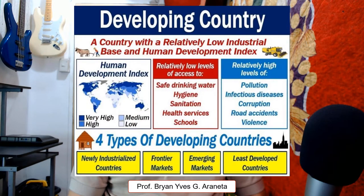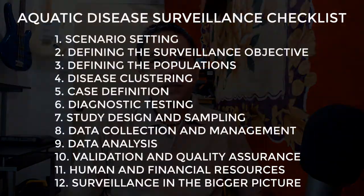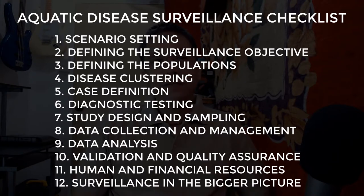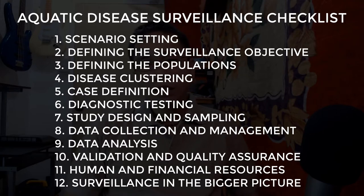As we all know, these countries have limited capabilities and expertise, especially in fish health monitoring. So let's go directly to the checklist. We have: number one, scenario setting; defining surveillance objective; defining the populations; disease clustering; case definition; diagnostic testing; study design and sampling; data collection and management; data analysis; validation and quality assurance; human and financial resources; and surveillance in the bigger picture.